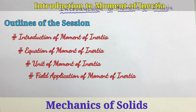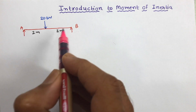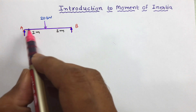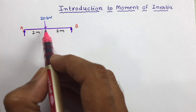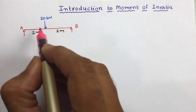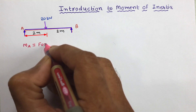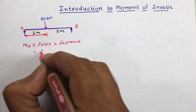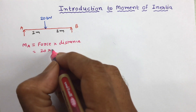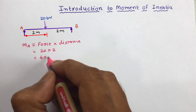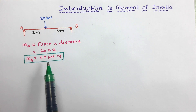Let us start with the introduction of moment of inertia. In this figure, a simply supported beam AB is shown, which has a total span of 4 meters. The beam is subjected to a central point load of 20 kN at the center. We know how to determine the moment of force. At point A, the moment is equal to force into distance. Here the force is 20 kN and the distance from point A is 2 meters, so the moment at point A due to the 20 kN force will be 40 kN·m. This is called moment of force.